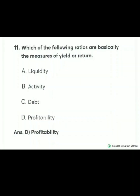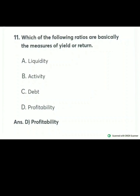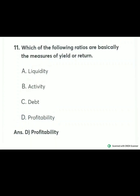Which of the following ratios basically measures the yield or return? The answer is profitability ratio. Liquidity ratio measures the liquidity position; activity ratio measures activity or turnover; debt ratio represents debt turnover; and profitability ratio measures the yield, return, or income of the firm. So here option D is correct.